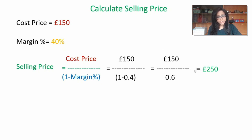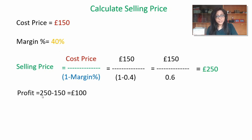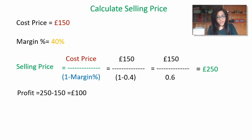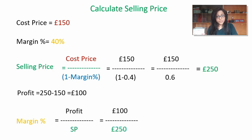Now you have cost price, margin, and selling price. To double-check, do the reverse calculation. Profit is 250 minus 150, which is £100. Margin percentage is profit over selling price: 100 over 250 equals 0.4 — 40%. So you've confirmed the correct margin percentage.